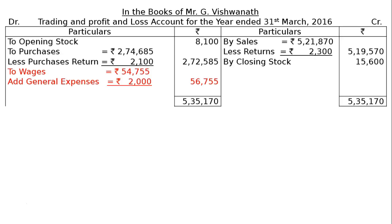Take the credit side total to the debit side. We have to deduct all three expenses to find the gross profit carried down, that is Rs. 1,97,730. In the profit and loss account, we will write by gross profit brought down Rs. 1,97,730.